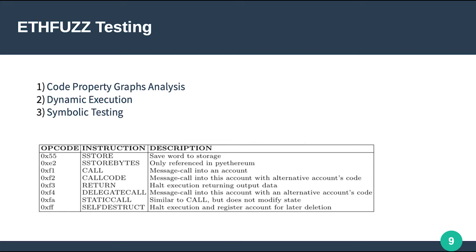EthFalls comprises three main stages. The first stage is code property graph analysis, where we perform call graph analysis and look for low-level EVM instructions in a given smart contract that might be subject to potential cyber attacks. In a table shown here, you can see EVM instructions that are more involved in potential hacks — cyber attackers are very interested in these basic instructions to manipulate the contract and perform various attacks.